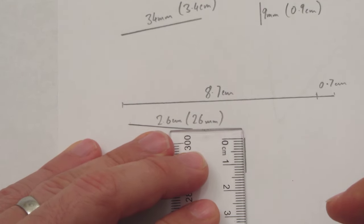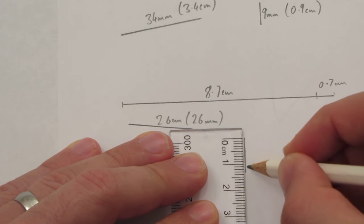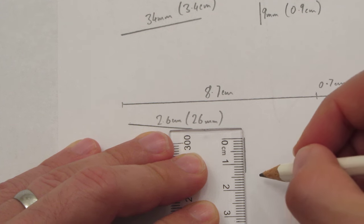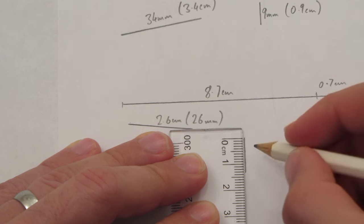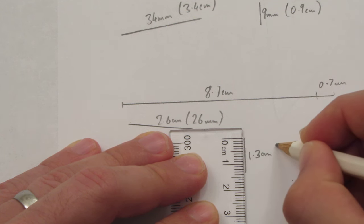And then here we go. In centimeters and millimeters it's 1 point... Your eyes are probably better than mine. I make it 1.3. 1.3 centimeters which is 13 millimeters.